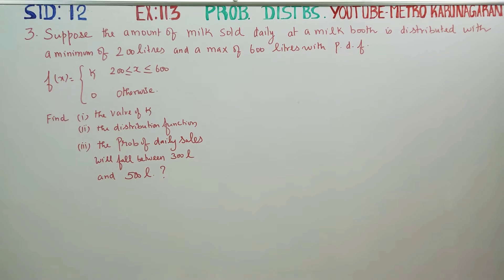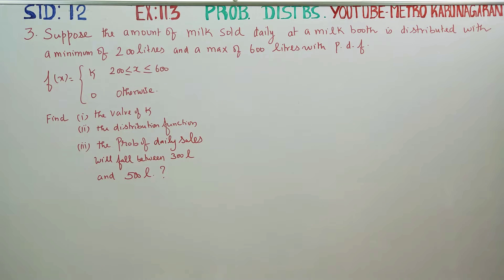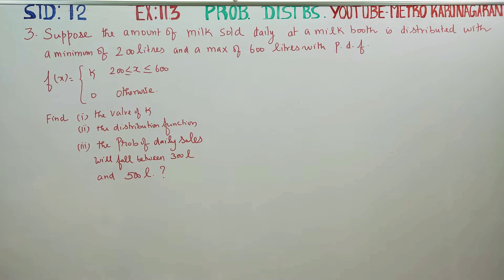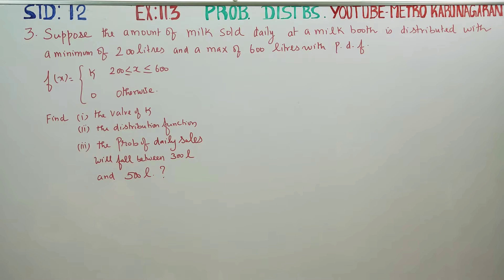Dear 12th standard students, in exercise number 11.3, suppose the amount of milk sold daily at a milk booth is distributed with a minimum of 200 litres and a maximum of 600 litres with a probability density function. Find the value of k.